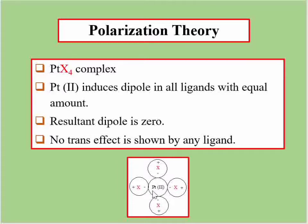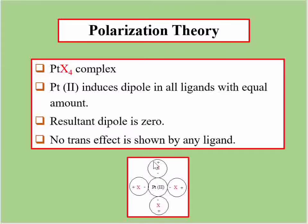In the PtX4 case, platinum(II) ion is electropositive — it is a positively charged ion — so it will induce polarity in these four ligands. Because all four ligands are the same, the polarity is induced in equal amounts in all four. The dipole induced in each X is equal, and the resultant dipole moment is zero. So no trans effect is shown by any ligand in this symmetric complex.